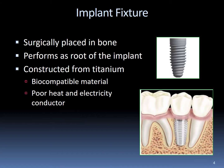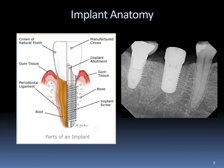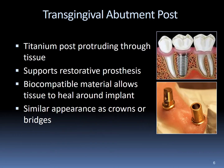The dental implant fixture is surgically placed in bone. Once placed, it performs as a root and provides support to the implant. The structure is made of titanium, which is biocompatible with human bone and is a poor heat and electricity conductor. The transgingival abutment post is also made of titanium. This post protrudes through the gingival tissue and provides support to the restorative prosthesis. The biocompatible material allows for integration with tissue and allows tissue to heal around the implant, possessing a similar appearance to crowns and bridges when inserted into the oral cavity.